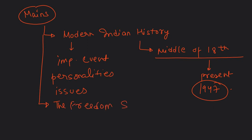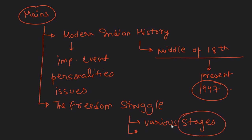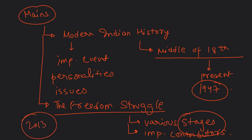UPSC mentions important contributors to the Freedom Struggle — people who participated, died, or were jailed. This includes personalities like Usha Mehta, who secretly ran the All India Radio of the Indian National Congress during British rule, secretly passing INC messages to the public. A question on Usha Mehta came in 2013. This point is explained in only two lines in Spectrum, and students who don't study Spectrum carefully will miss it.